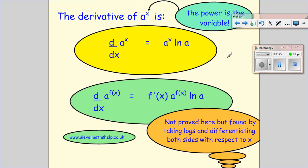Now, the second question, instead of using the exponential function, we just have an exponential. So we need to know this result. When you differentiate a to the power of x, you get a to the power of x times ln a. And that is ln a not log base a. It's ln, log in base e. And if this happens to be a function of x, just like before, you get the differential of the function times a to the f of x ln a. And I haven't proved it here, but you can prove it by taking logs of both sides of y equals a to the x and then differentiating both sides with respect to x.